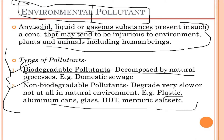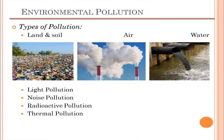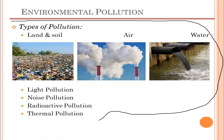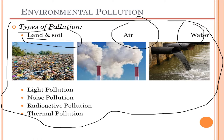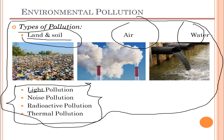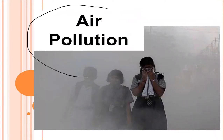Non-biodegradable examples also include aluminum cans, gases, DDT, and mercury salts. There are several types of pollution you may have studied in junior classes — we are going to study them in a broader sense. These include land and soil pollution, air pollution, water pollution, and four subcategories: light pollution, noise pollution, radioactive pollution, and thermal pollution.